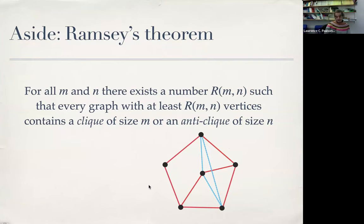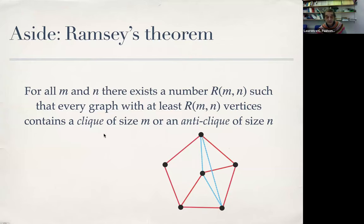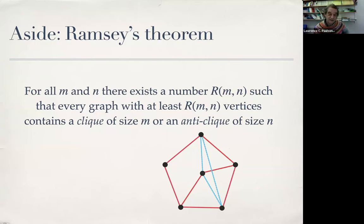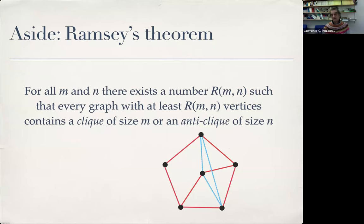For my next example, Ramsey's theorem: if you have two integers m and n, there exists some number R(m,n) such that every graph at least that large will contain a clique of size m or an anticlique of size n. Here is the party problem example with six people — the red lines are edges representing people who know each other. Almost everybody knows everybody else, yet there are three people connected by blue dotted lines who do not know each other. This is an anticlique or independent set. For the case of three and three, R(3,3) happens to be six: if you have six people at a party, there will definitely be either three who each know each other or three who do not.